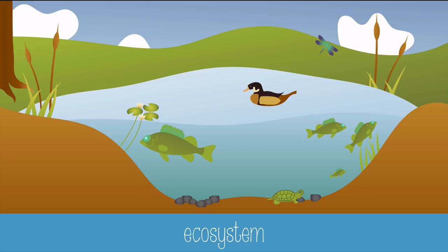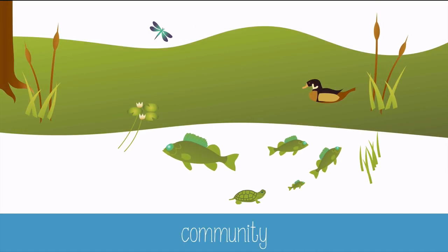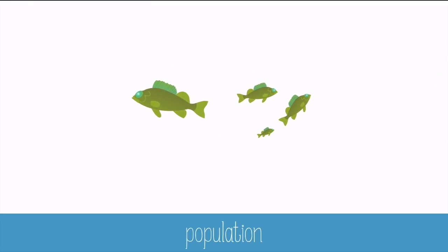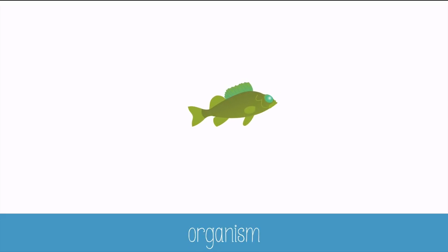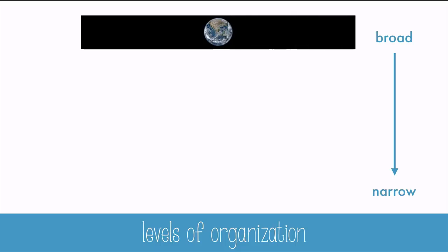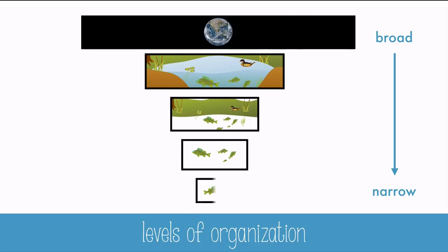A community is all of the interacting organisms in an area — it does not include the non-living factors. A population is all of the organisms of one type of species in the area. And an organism refers to an individual animal. In order, the levels of organization from the most broad to the narrowest are the biosphere, ecosystem, community, population, and organism.